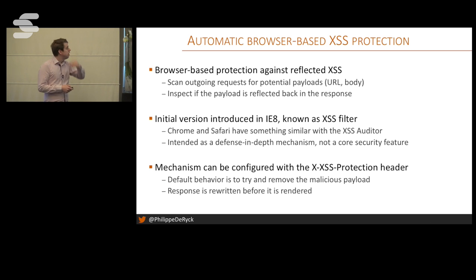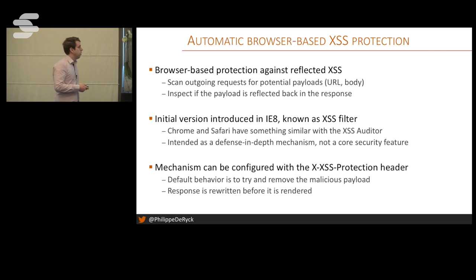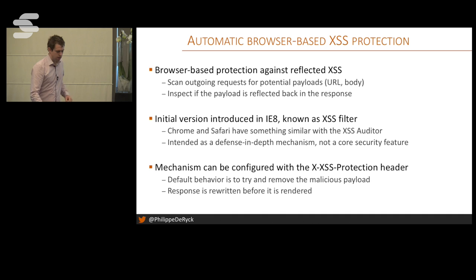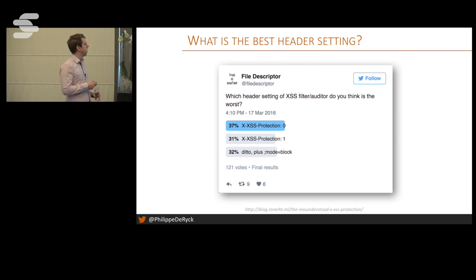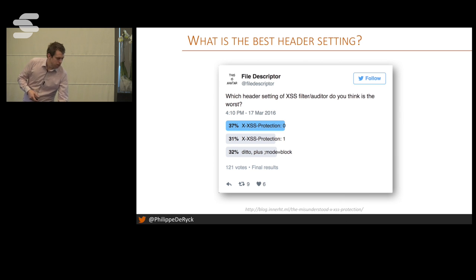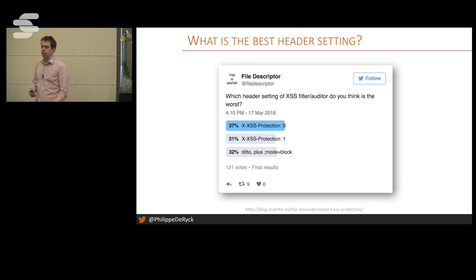You can configure this mechanism with the X-XSS-Protection header — it's on by default in browsers. A cross-site scripting bug hunter did a poll asking 'what's the best setting for this header?' and about one third of respondents favored each of the three options: turn it off, turn it on, or put it in blocking mode. There is apparently not much consensus about how to configure this header.